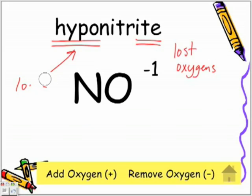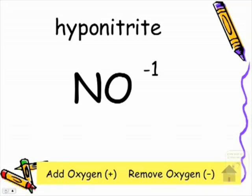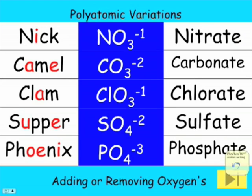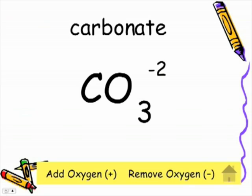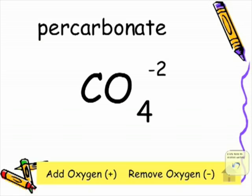Let's look at the next one. Camel should remind us that it's carbonate. Carbonate is CO3-2. Here we have the polyatomic carbonate. We're going to add an oxygen - it jumps up to CO4. The charge remains the same. As we said, we add per as the prefix to carbonate because we've added an oxygen. Now we're going to remove an oxygen and we're back to the original carbonate.